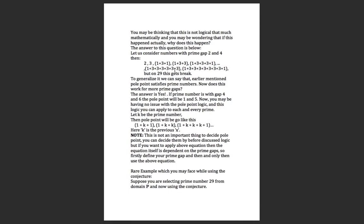Here a and b are positive difference gaps. For example, we take 2 and 4 as prime gaps — that is, 1 and 3 — since 1 plus 3 equals 4 and 3 minus 1 equals 2. You may think this is not logical, but we can generalize this theory. The prime sequence can be written as: 2, 3, 5 written as 1+3+1, and 7 written as 1+3+3, and so on.